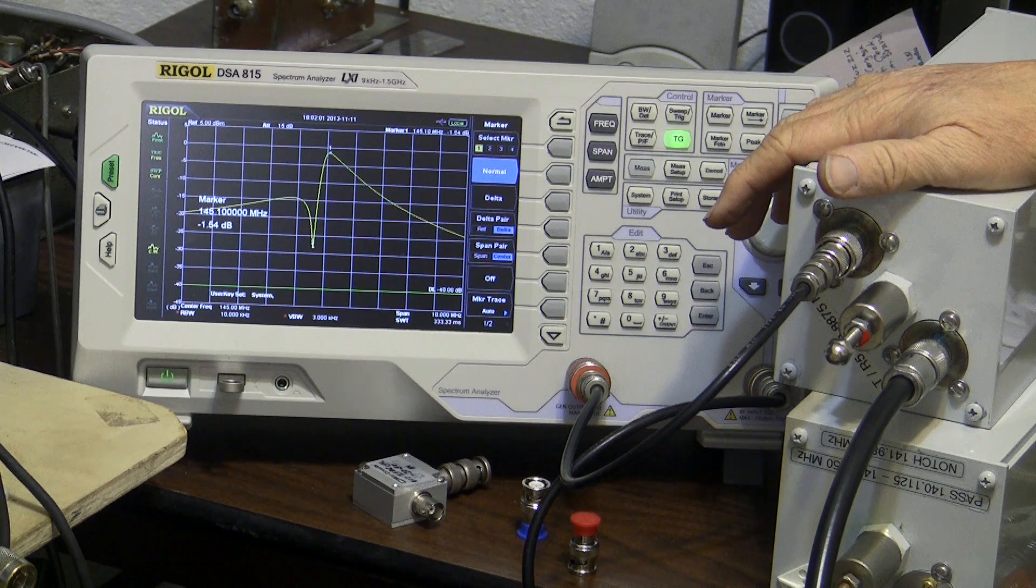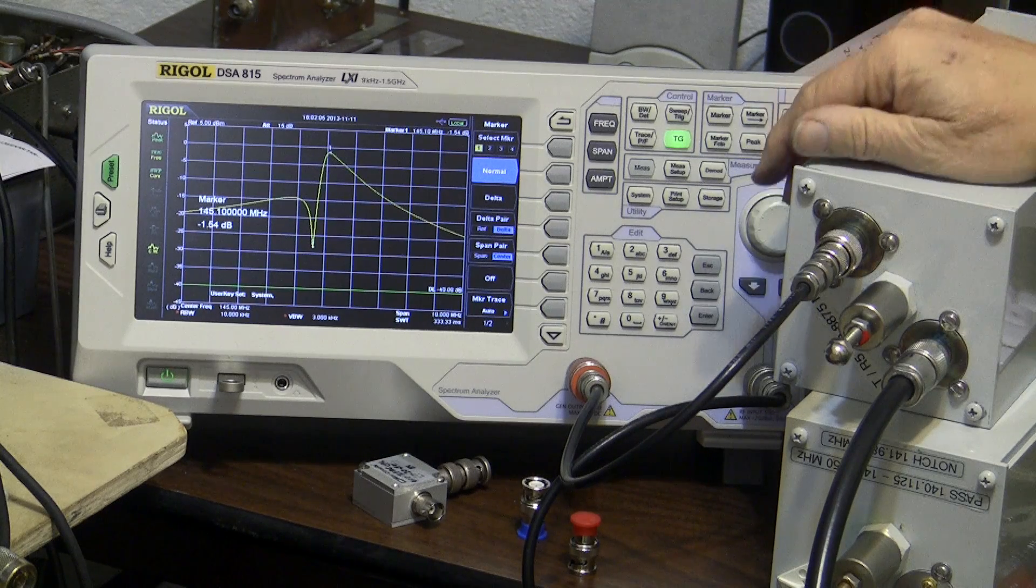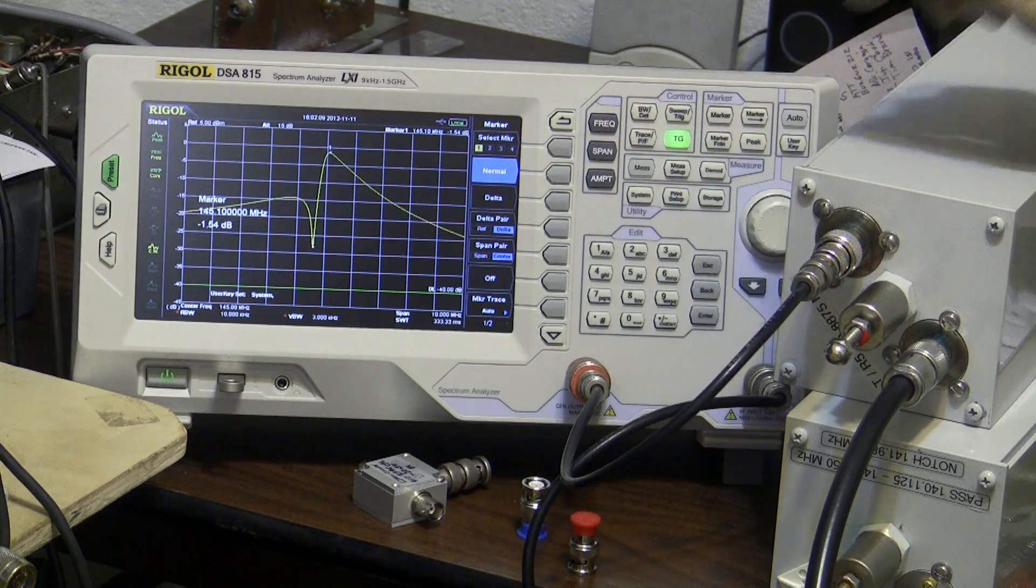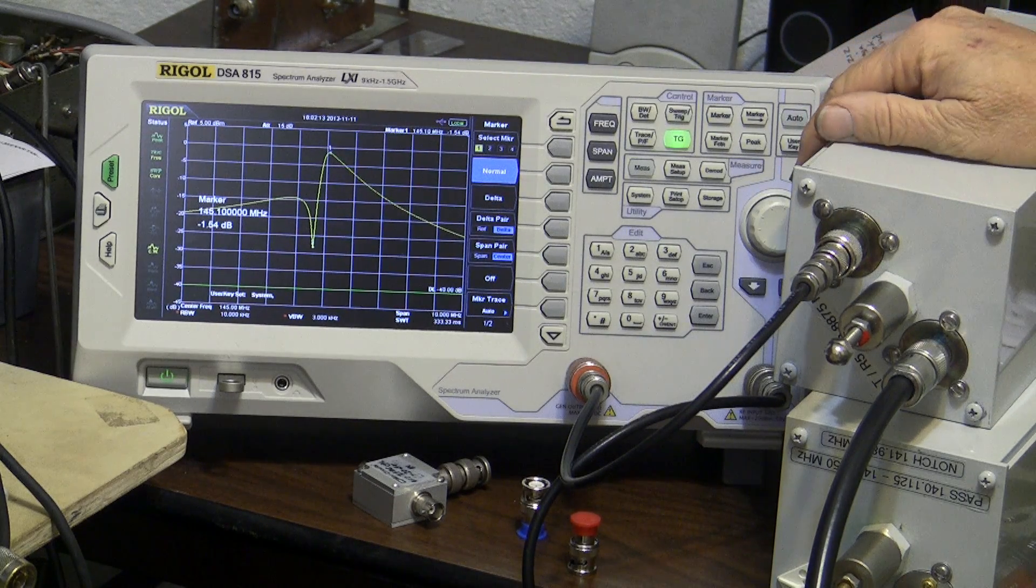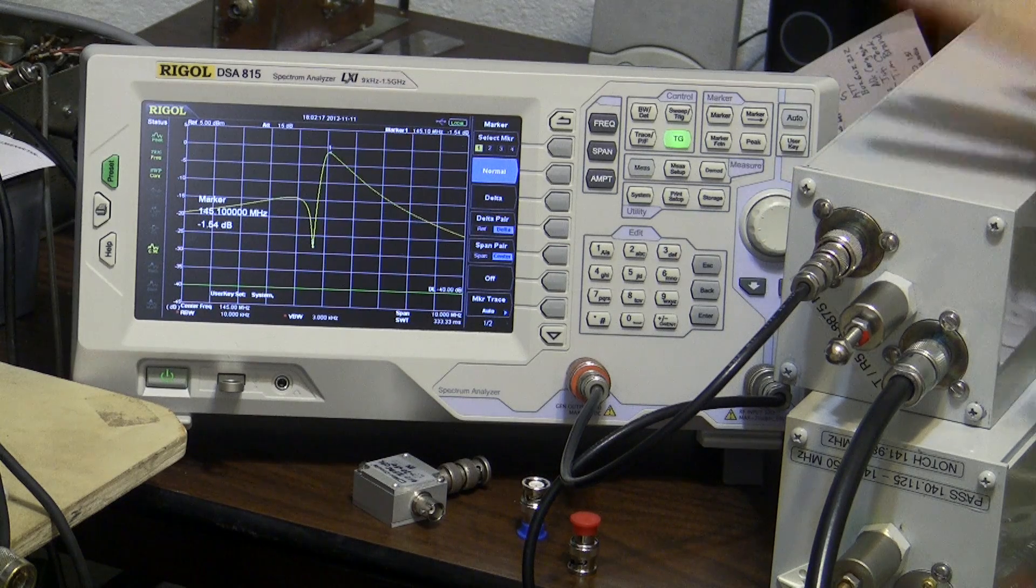But that's approximately where you'd be in this particular configuration. And another pass reject cavity would get you about 70 dB of isolation here, more than likely, which is what you'd need for a typical duplexer on each channel. So you'd have three cavities on each with the pass band filter here.